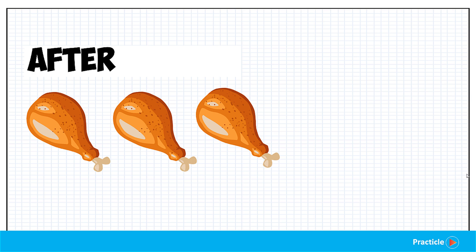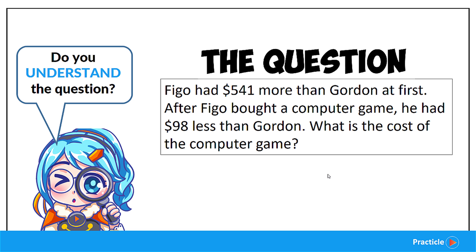Now that you're clear on what the before and after concept is, let's move on to see how to apply it to a math question. Here's the question: Figo had $541 more than Gordon at first. After Figo bought a computer game, he had $98 less than Gordon. What's the cost of the computer game?